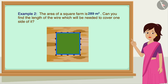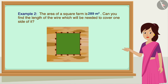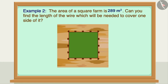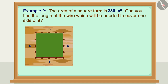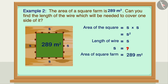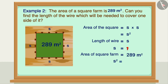It is a square farm, so all sides are equal. Suppose the length of one side is s; then the area will be s squared. To find the length of the wire, we need to find s — the length of one side. Since the area is 289 square meters, s squared equals 289, so s will be the square root of 289.